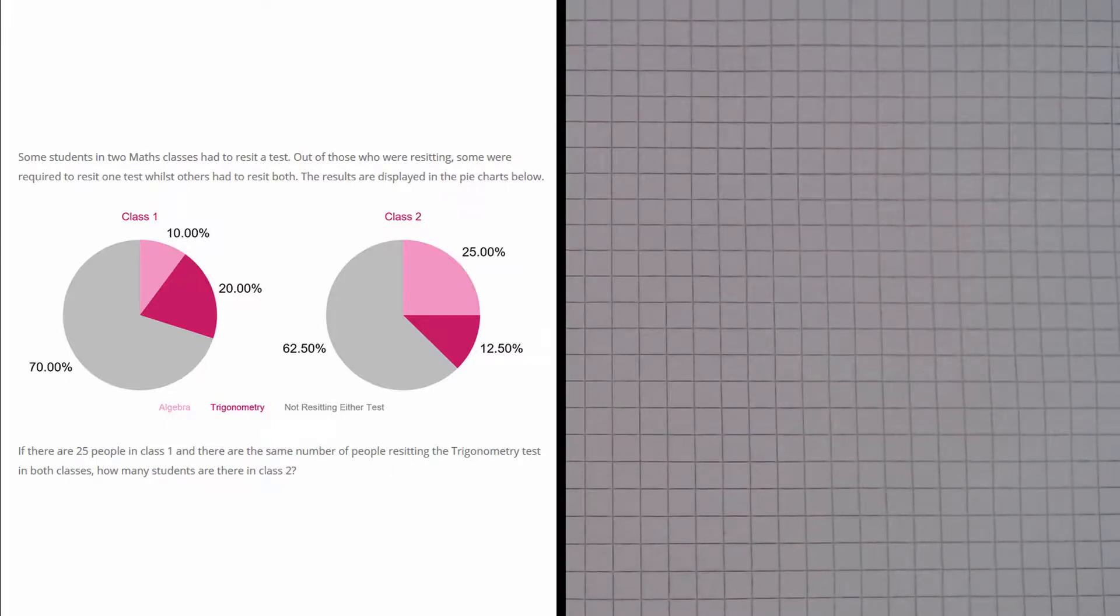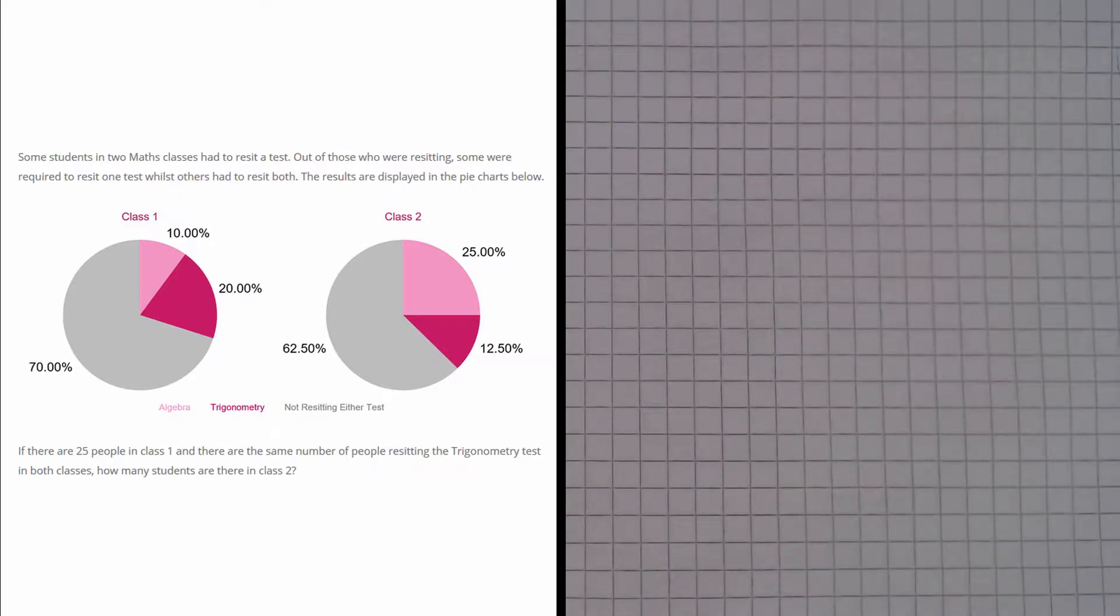In this question we are given two pie charts that each represent the proportion of students in each class resitting algebra or trigonometry.